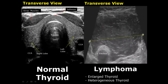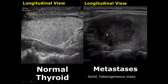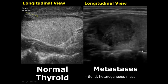Metastasis to the thyroid can have variable appearances based on the type of primary cancer. Usually they are solid heterogeneous masses inside the thyroid.